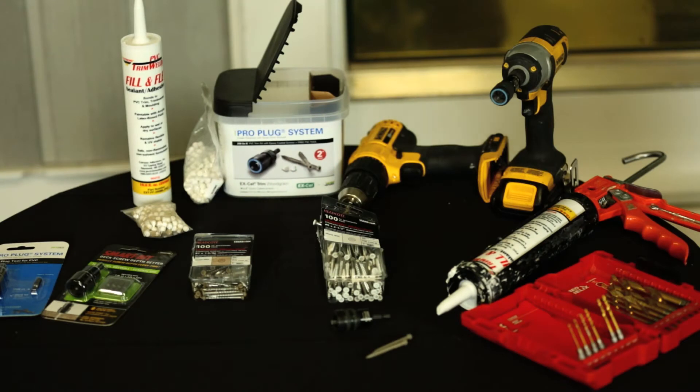There are no special tools required in order to work with PVC trim, sheet, and molding. Traditional carbide tipped saw blades, carbide tipped router bits, and woodworking drill bits will work best.